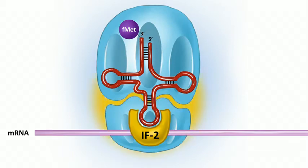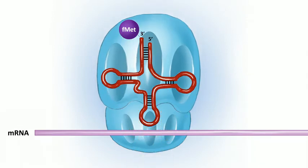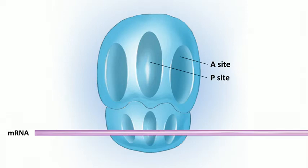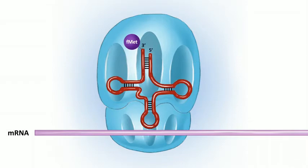IF2 first binds to the 30S, then binds to the methionine tRNA. When the 50S comes along it hydrolyzes a GTP on the initiation factor, releasing energy that allows the 50S to attach to the 30S, forming a complete 70S ribosome. There are three sites where tRNA can bind: the A site where incoming aminoacyl-tRNA binds, the P site where the growing polypeptide chain is found, and the E site where free tRNA exits.